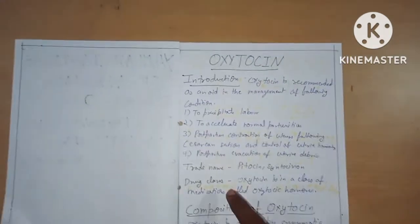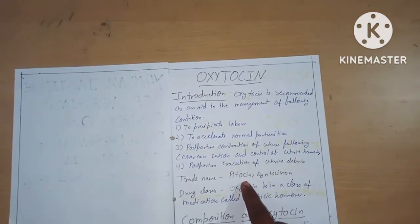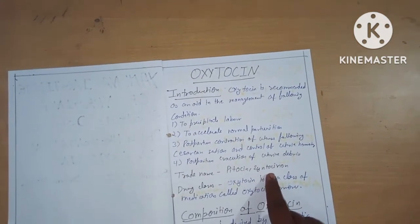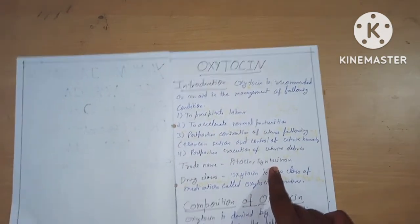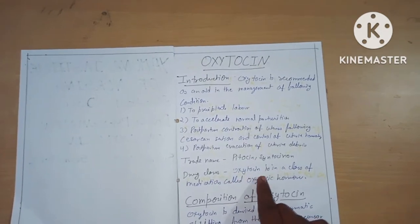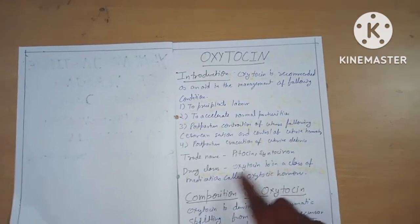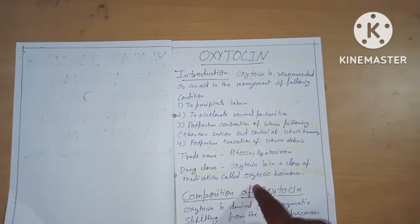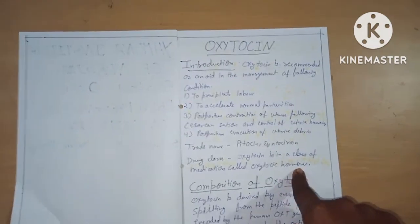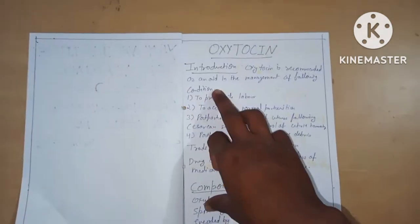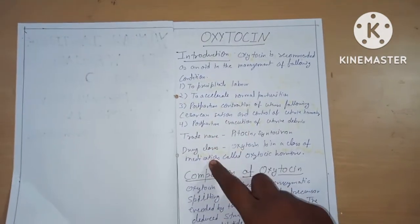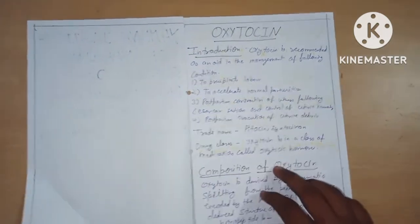Next is trade name: Pitocin, Syntocinon. Drug class: oxytocin is a class of medication called oxytocin hormone. The introduction includes trade name, drug class, and introduction.